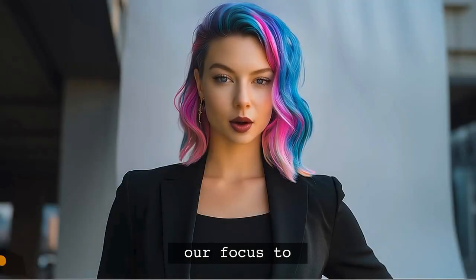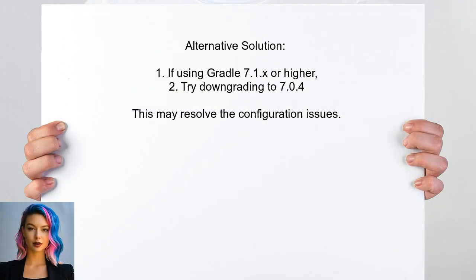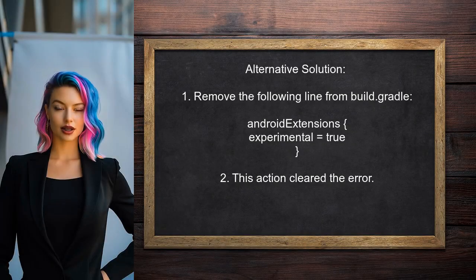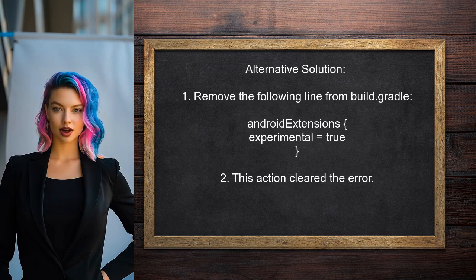Another solution suggests that if you're using Gradle version 7.1.x or higher and have already tried matching fallbacks without success, consider downgrading to version 7.0.4. Separately, another user suggests removing the old configuration from the build.gradle file — specifically, deleting the line that enables experimental Android extensions.